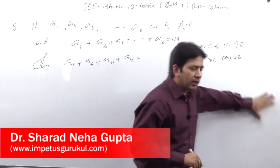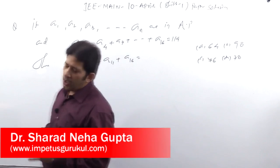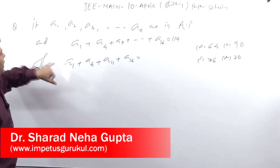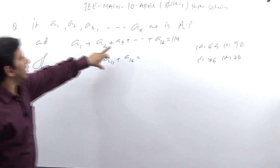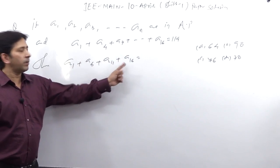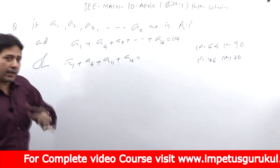Next question we will see is JEE 10th April Paper shift 1 question. The question is if A1, A2, A3, AN are in AP and A1, A4, A7, A16 equal to 114, then find A1 plus A6 plus A11 plus A16.